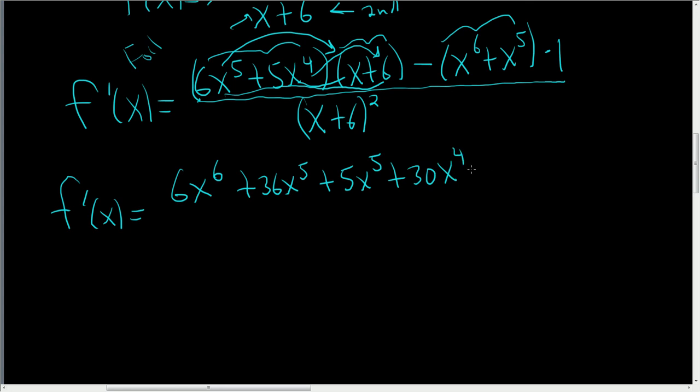Very easy to mess up here. Then distribute this minus sign. So just distribute it there. So you get minus x to the sixth minus x to the fifth. And all of this is being divided by x plus 6 squared.